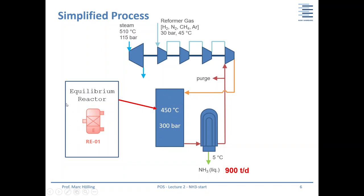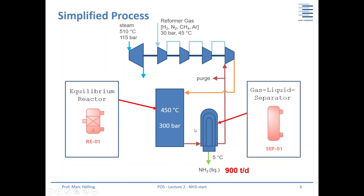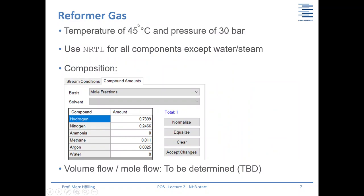In DW-SIM, we use an equilibrium reactor for the ammonia reactor and a gas-liquid separator for the condenser, plus a compressor and expander. The reformer gas temperature should be 45 degrees Celsius at a pressure of 30 bars. Use NRTL as the property package for all components except water and steam. The composition at the inlet is specified, and one homework task is to determine the mass flow yourself.